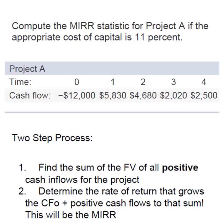We're going to look at Project A with a cost of capital of 11%. It's a four-year project. The cash flows include a negative $12,000 initial outlay or outflow in year zero, and then four positive cash flows.